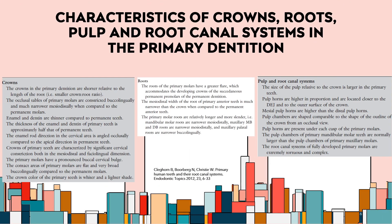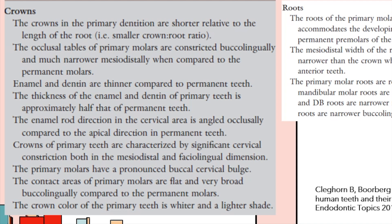Now we're going to look at the characteristics of crowns, roots, the pulp, and root canal systems in the primary dentition, from a study by Cleghorn titled Primary Human Teeth in the Root Canal Systems, published in Endodontic Topics in 2012. The crowns of the primary dentition are shorter relative to root length, with a smaller crown-to-root ratio. Enamel and dentin are thinner — approximately half that of permanent teeth. The enamel rod direction in the cervical area is angled occlusally. Crowns are characterized by significant cervical constriction both mesiodistally and facially-lingually, with a pronounced buccal-cervical bulge on primary molars. The crown color of primary teeth is whiter and a lighter shade.